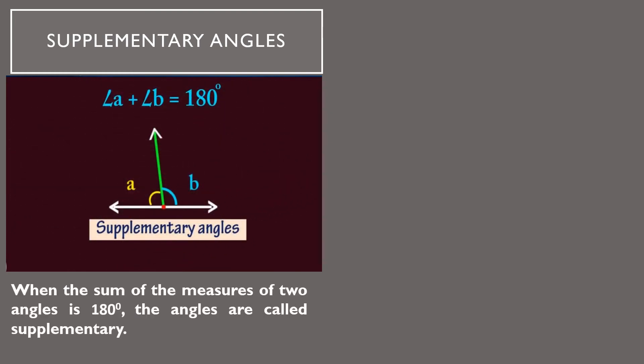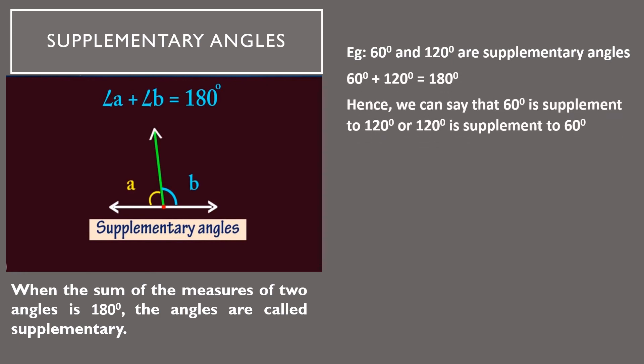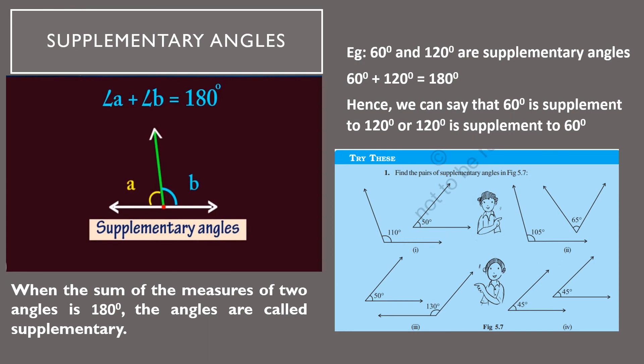Supplementary angles: when the sum of the measures of two angles is 180 degrees, the angles are called supplementary angles. Each angle is said to be the supplement of the other. For example, 60 degrees and 120 degrees — the sum of 60 and 120 equals 180. Therefore, 60 degrees is supplementary to 120 degrees, and 120 degrees is supplementary to 60 degrees.